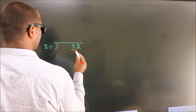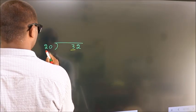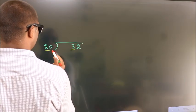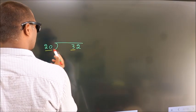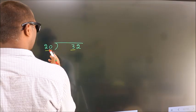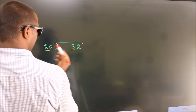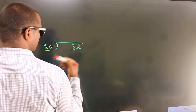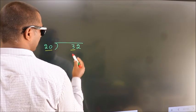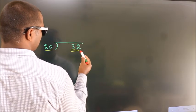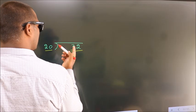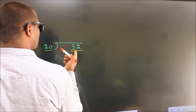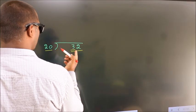Here we have 3 and here 20. 3 is smaller than 20. So we take two numbers: 32. A number close to 32.